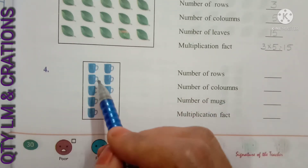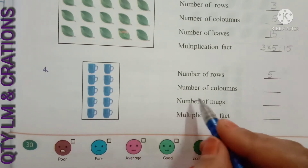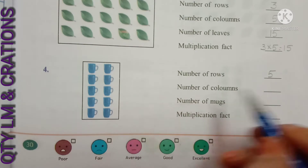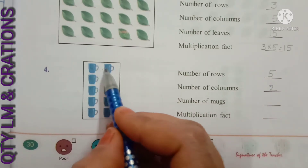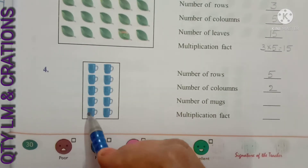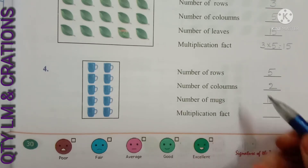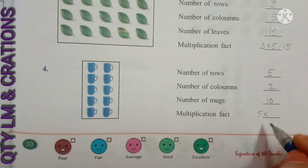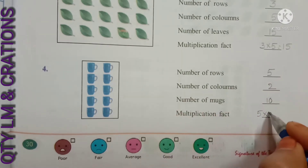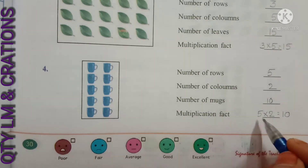Next question: in this box, mugs are there. How many rows? One, two, three, four, five — five rows. How many columns? One, two — two columns. Number of mugs: one through ten — ten mugs are there in the box. Multiplication fact: five rows into two columns — two fives are ten. And five twos are ten.